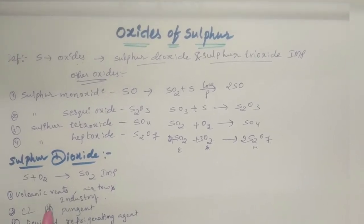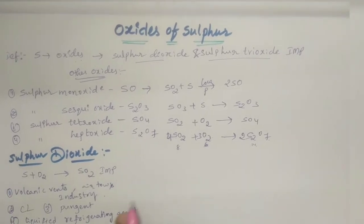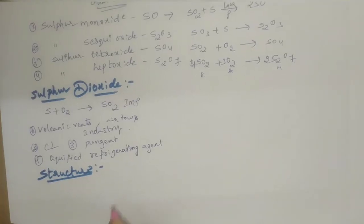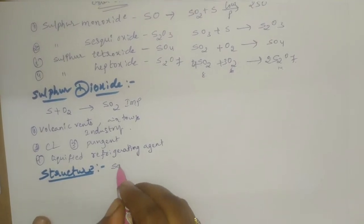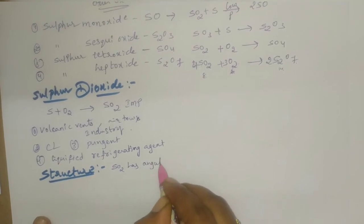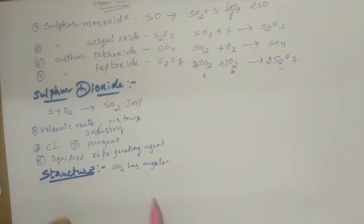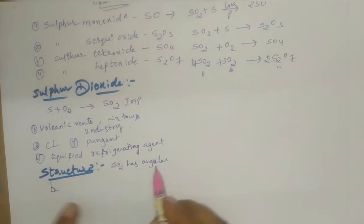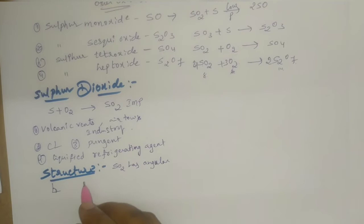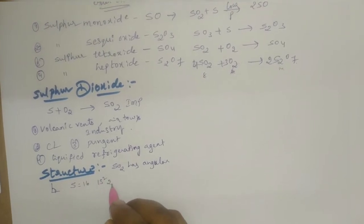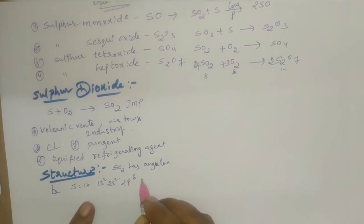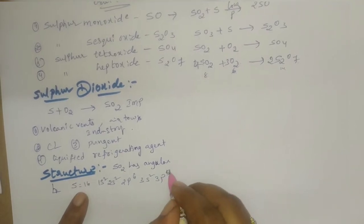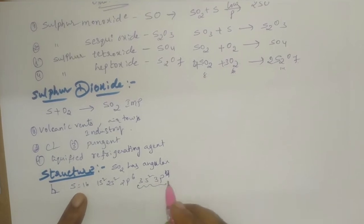What is the structure of sulfur dioxide? SO2 has an angular structure like two axes combined to form an angle. Sulfur atom first - sulfur has atomic number 16. Drawing electronic configuration: 1s2, 2s2, 2p6, 3s2, 3p4. This is the outer shell configuration.